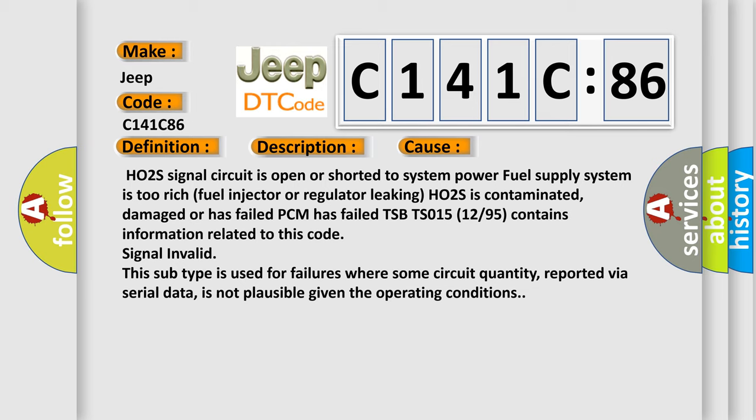TSB TS015 12/95 contains information related to this code. Signal Invalid: This subtype is used for failures where some circuit quantity, reported via serial data, is not plausible given the operating conditions.